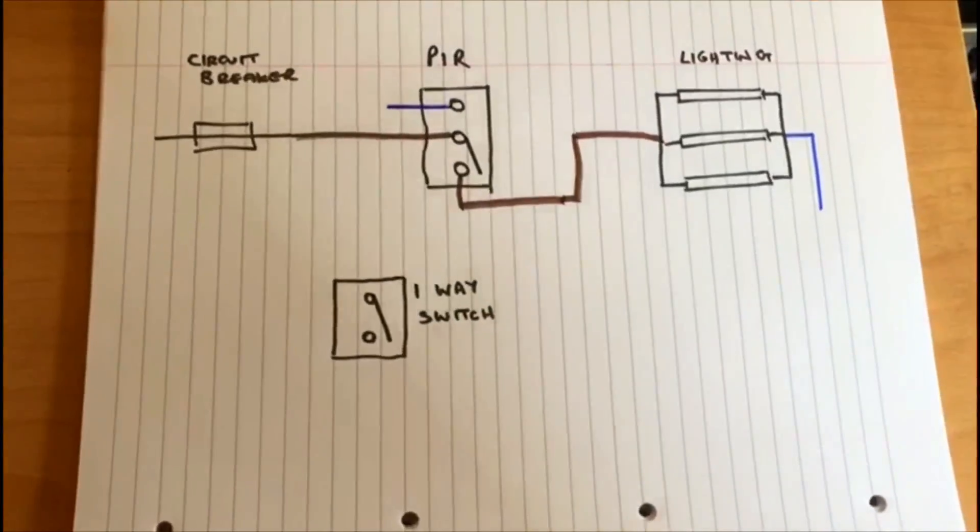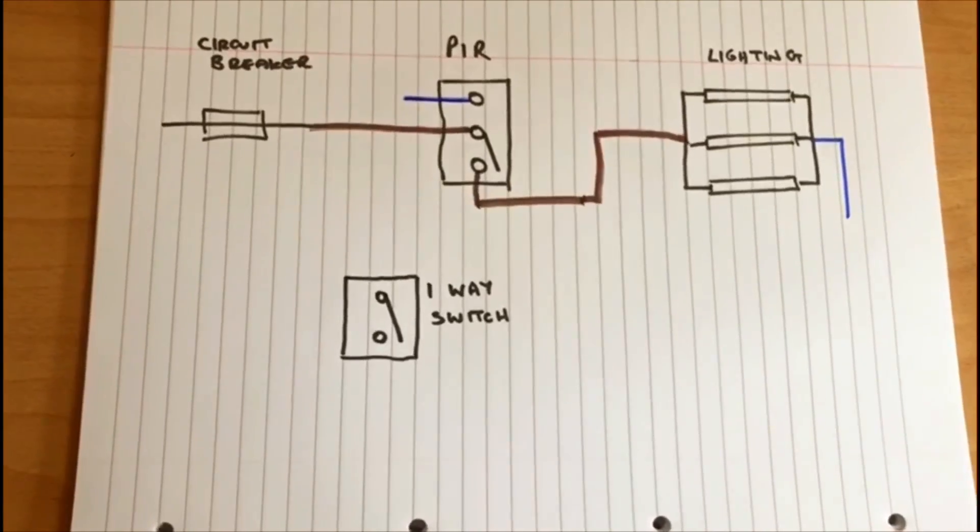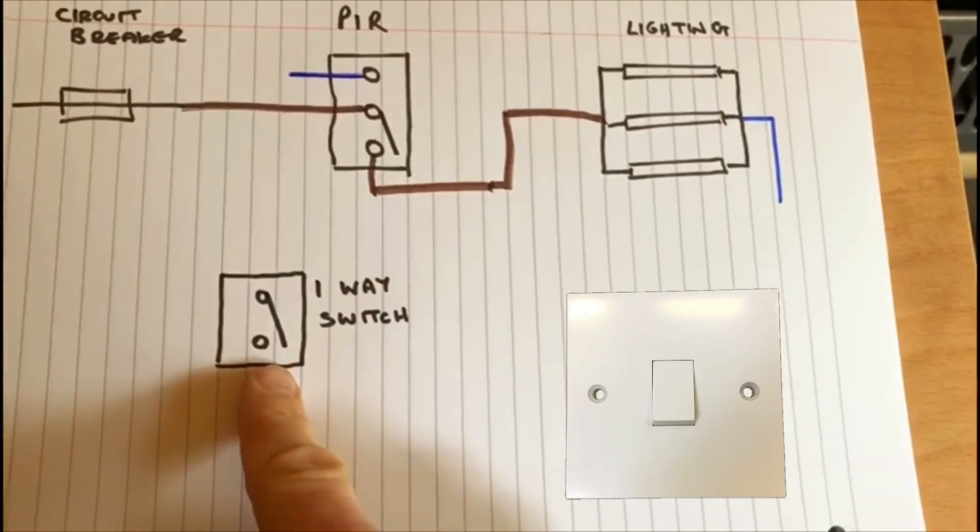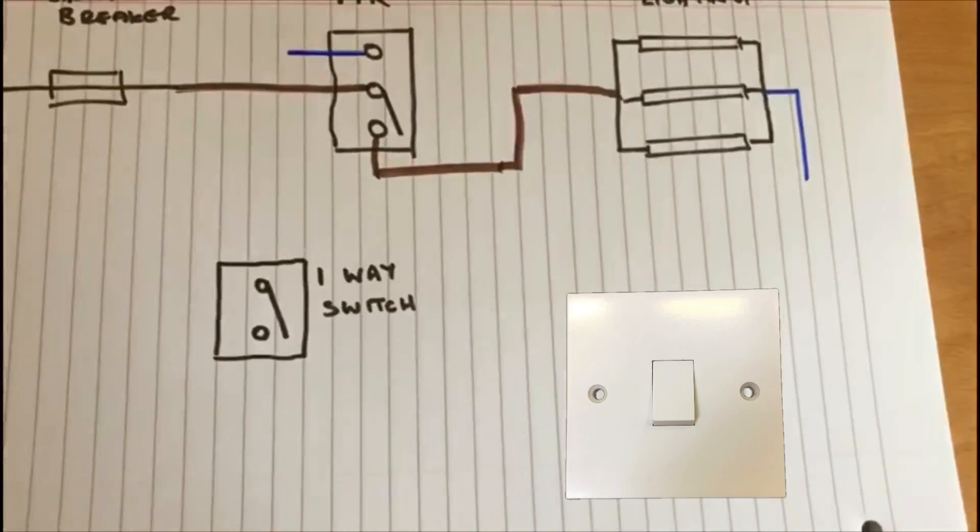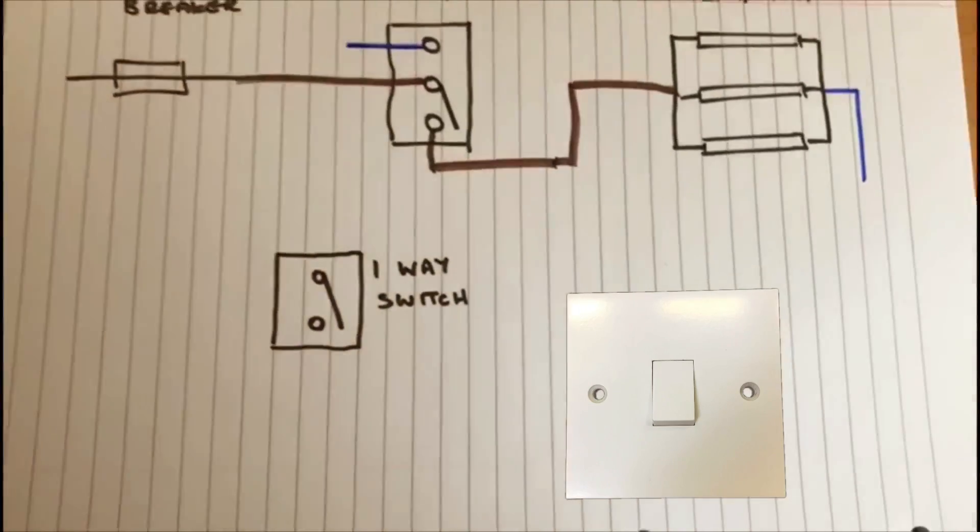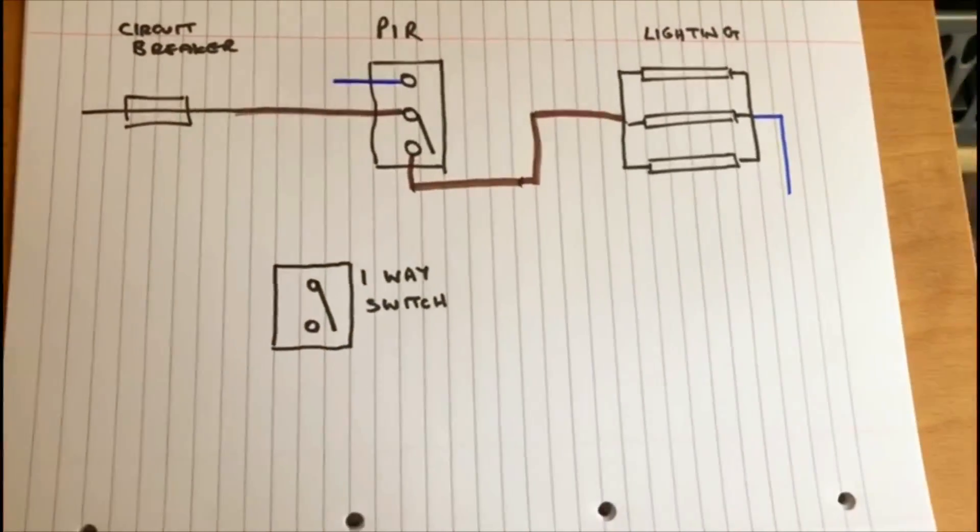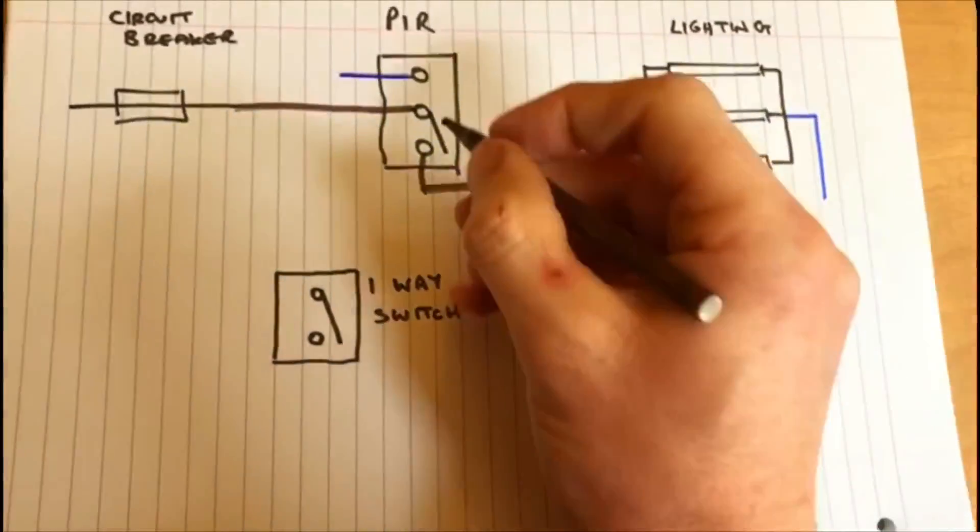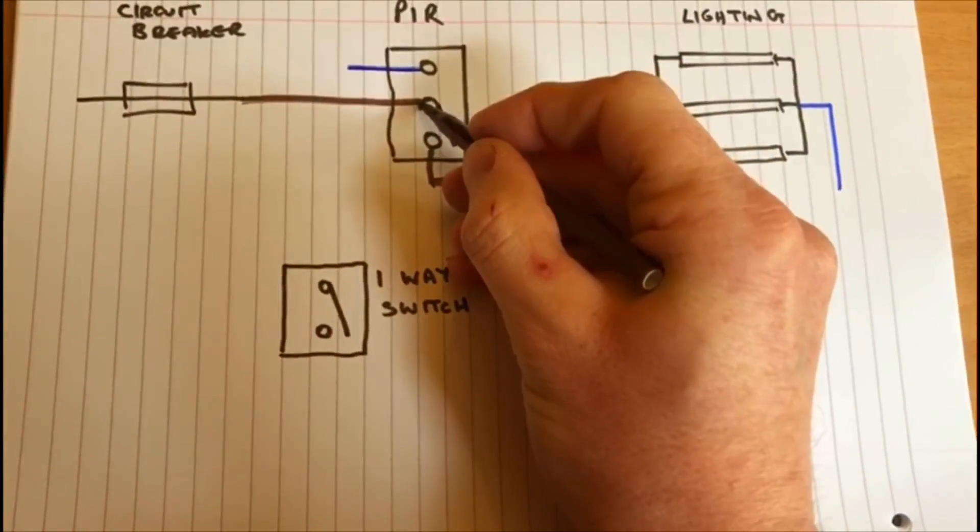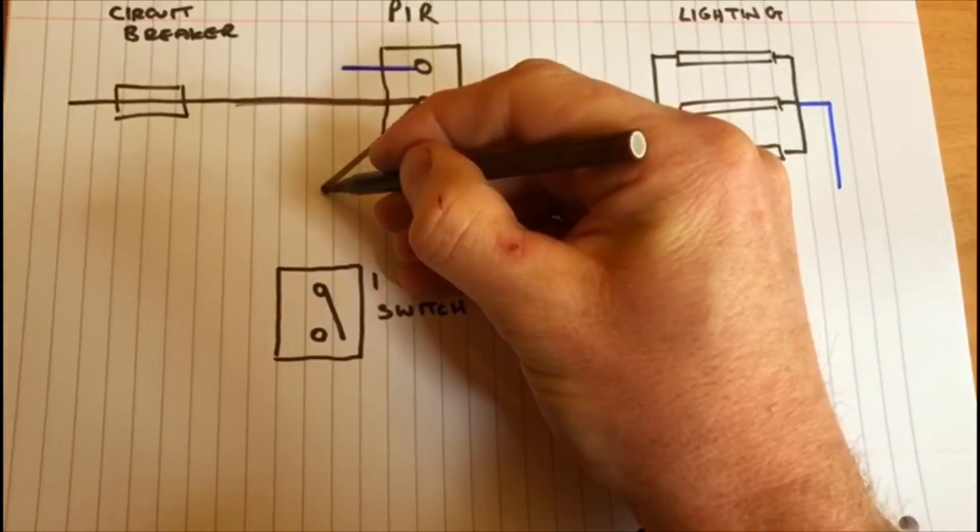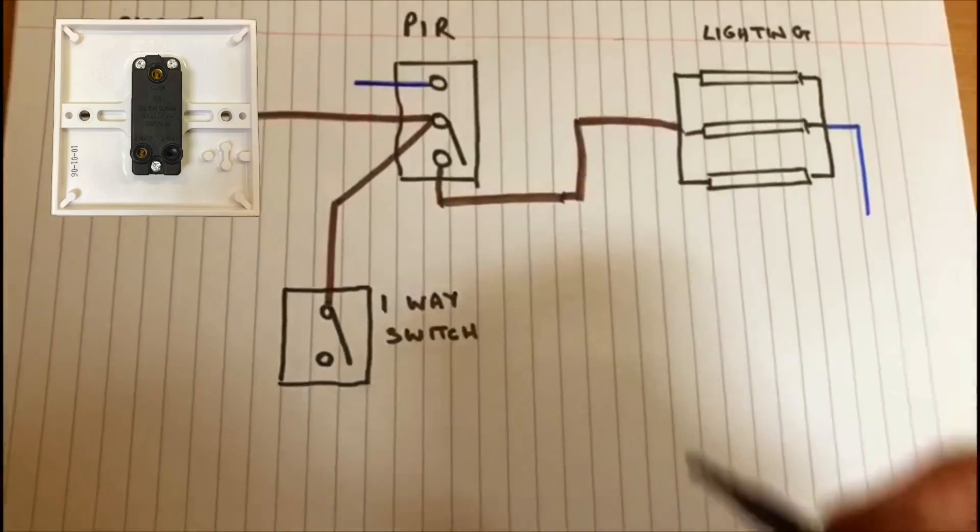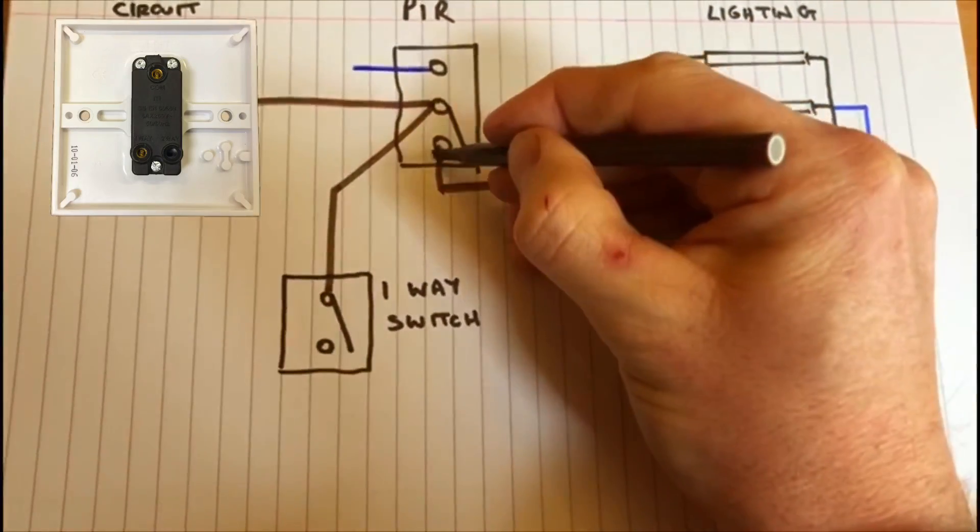Following on from the basic lighting circuit for a PIR, I've now introduced a one-way switch. The idea of a one-way switch is basically an override switch. So again, all we have to do here is take a live feed. The permanent live feed here will come to the top of the switch, and then we'll take another feed...